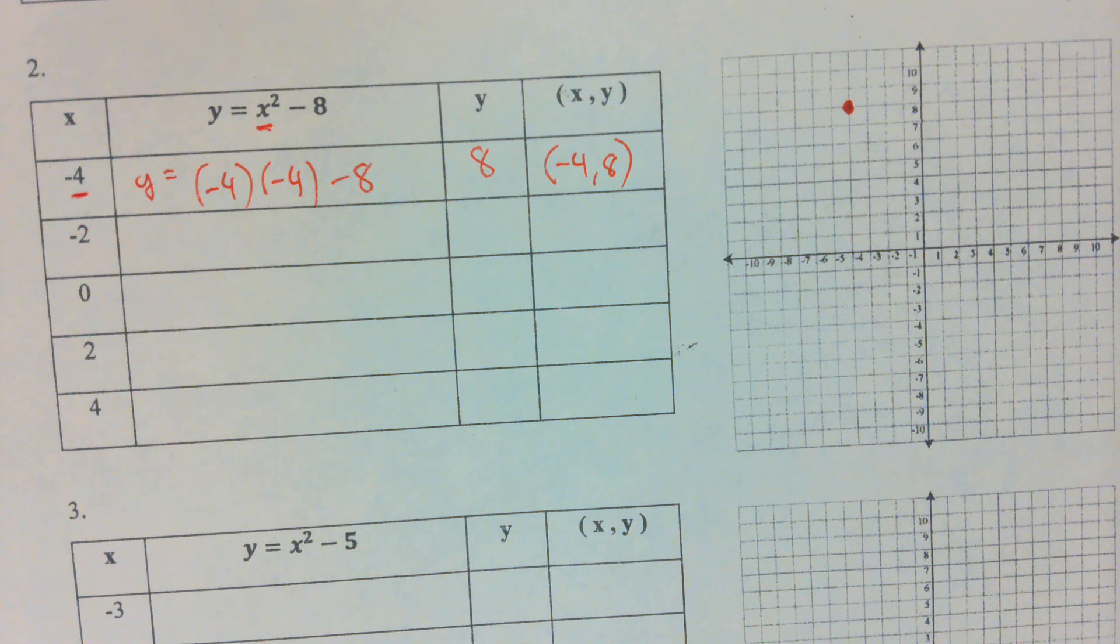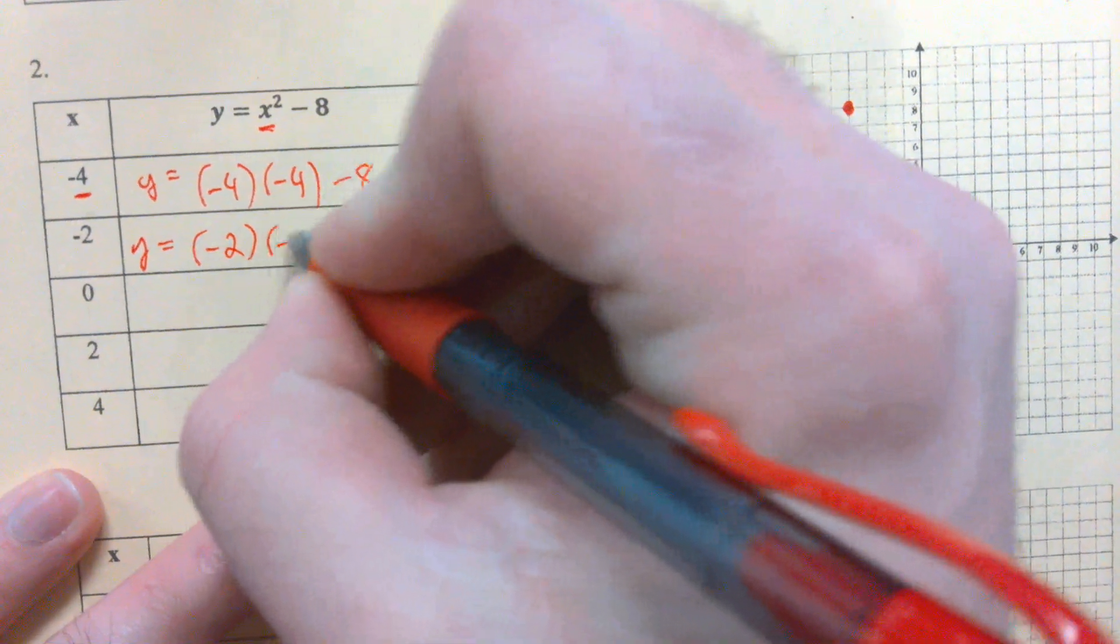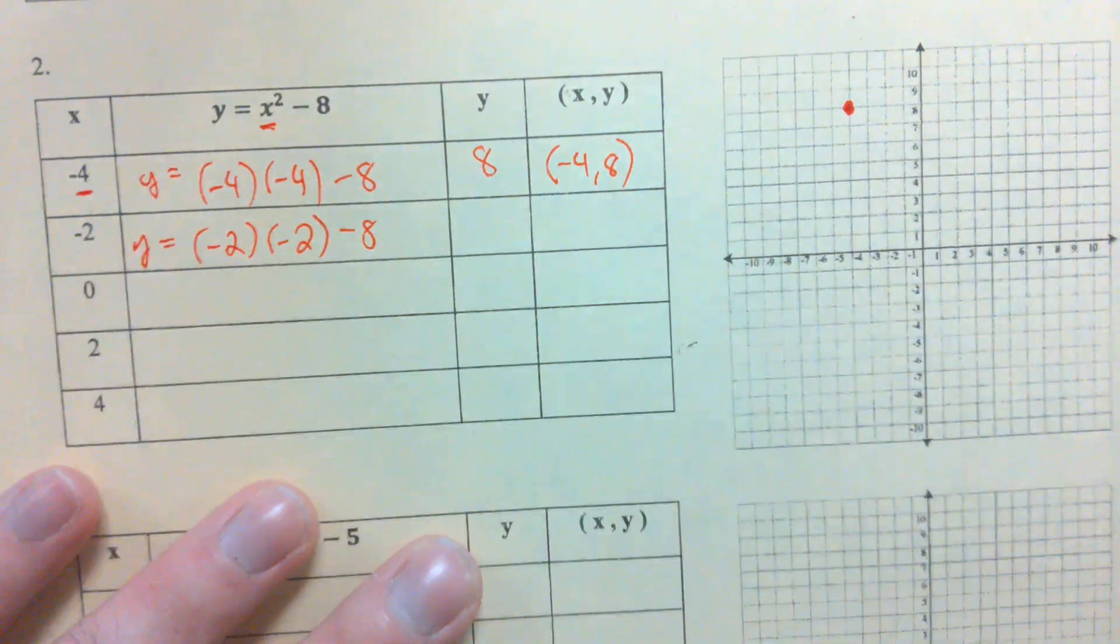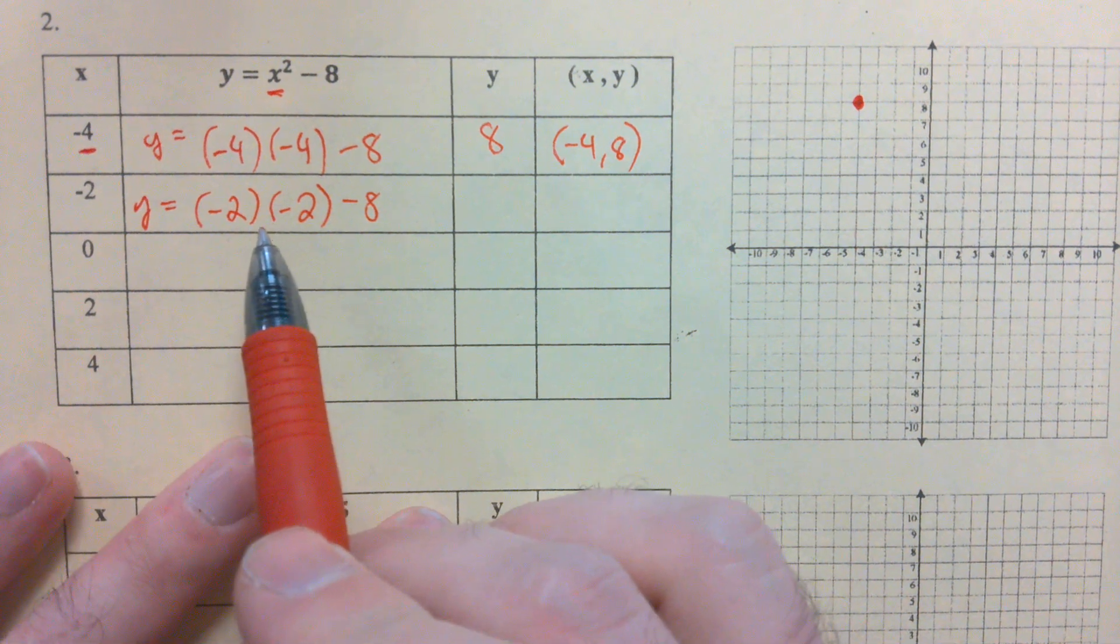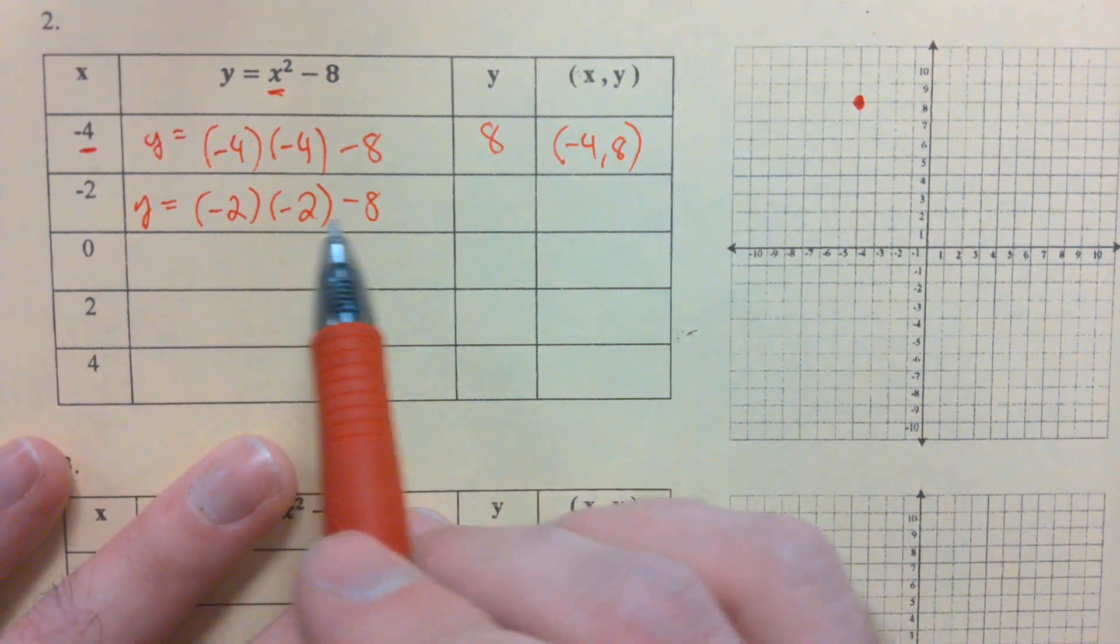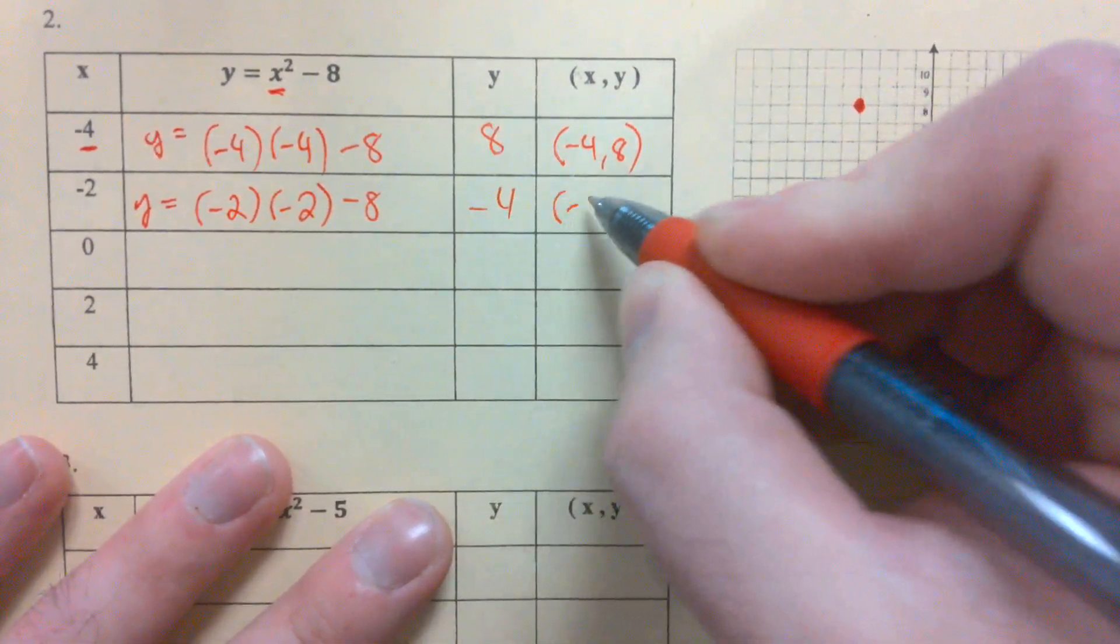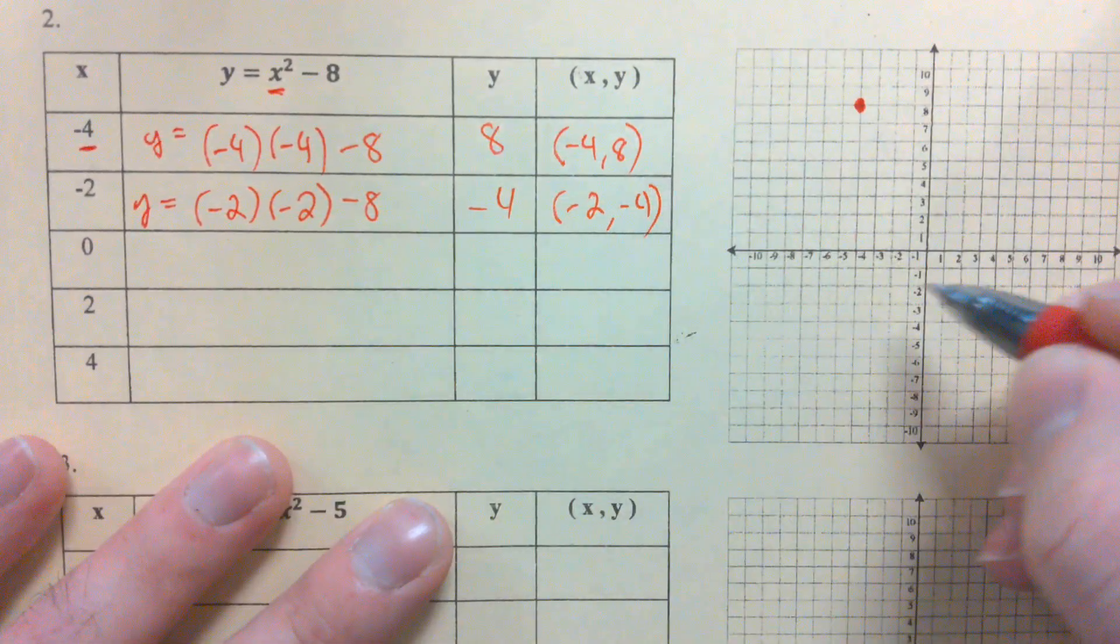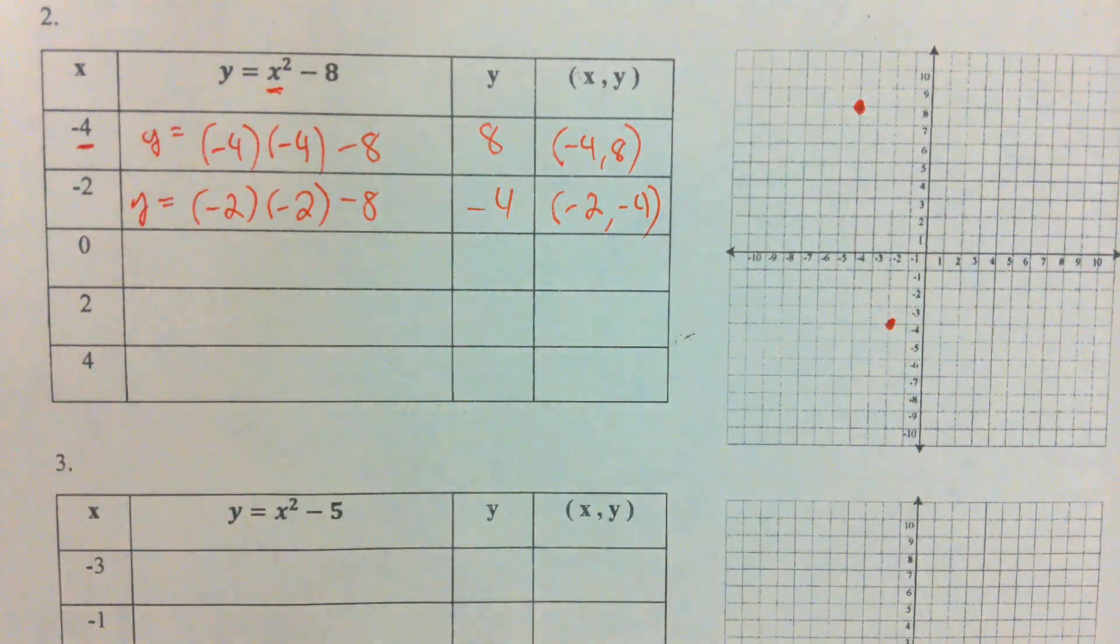Okay, I want to show you on the right spot. Next input is negative 2. y is equal to negative 2 times itself minus 8. What's negative 2 times negative 2? Positive 4. Positive 4 minus 8 gives me what? Negative 4. So now we've got negative 2, negative 4, left 2, down 4. There's our second point.